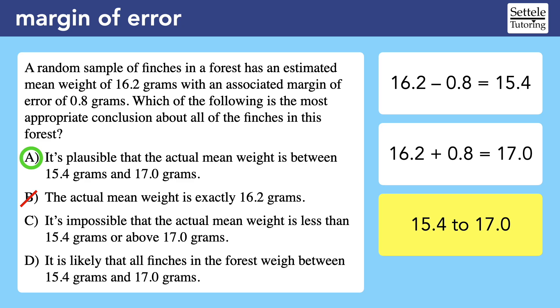Choice C is wrong because of the word impossible. It's also too strong. The margin of error gives us a range that is plausible, possible, reasonable, and likely. However, it's not a range that is definitive. It's also possible that the actual mean weight is 17.3 grams, which is outside of our range. It's very unlikely, but it's still possible.